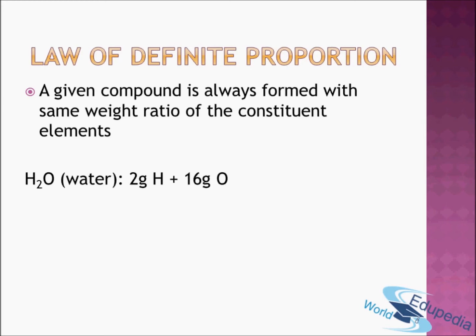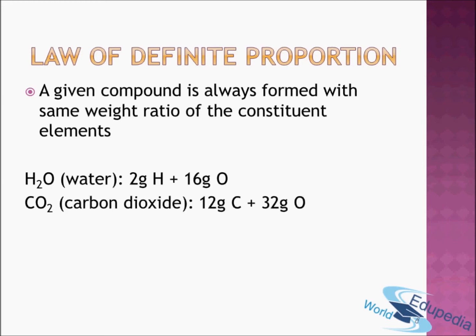You can see another example: carbon dioxide, CO₂. CO₂ has 12 grams of carbon and 32 grams of oxygen, so the mass ratio of carbon to oxygen in CO₂ is 3 to 8. This CO₂ can come from respiration of a human being, an animal, it can take part in respiration of plants, or it can even be from the exhaust of your vehicle. In any of these cases, the mass ratio of carbon and oxygen will always remain 3 to 8. This is what we mean by the law of definite proportion.